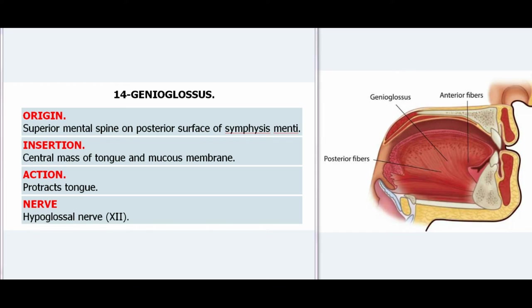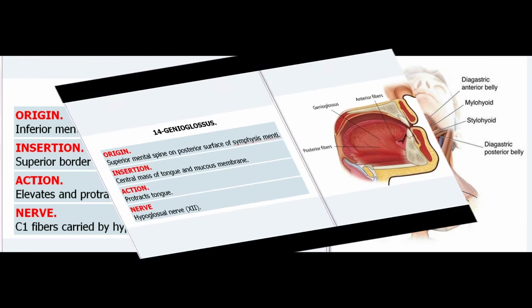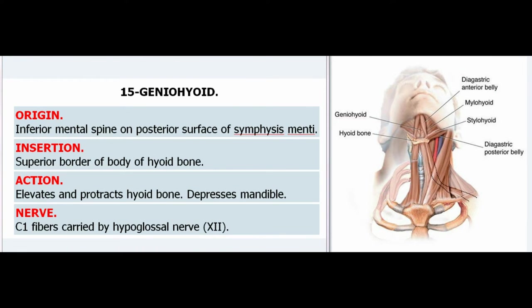14. Genioglossus. Origin: Superior mental spine on posterior surface of symphysis menti. Insertion: Central mass of tongue and mucous membrane. Action: Protracts tongue. Nerve: Hypoglossal nerve (XII). 15. Geniohyoid. Origin: Inferior mental spine on posterior surface of symphysis menti. Insertion: Superior border of body of hyoid bone. Action: Elevates and protracts hyoid bone, depresses mandible. Nerve: C1 fibers carried by hypoglossal nerve (XII).